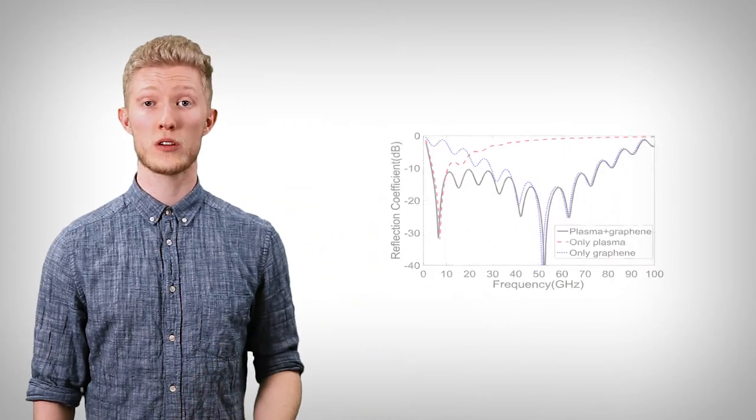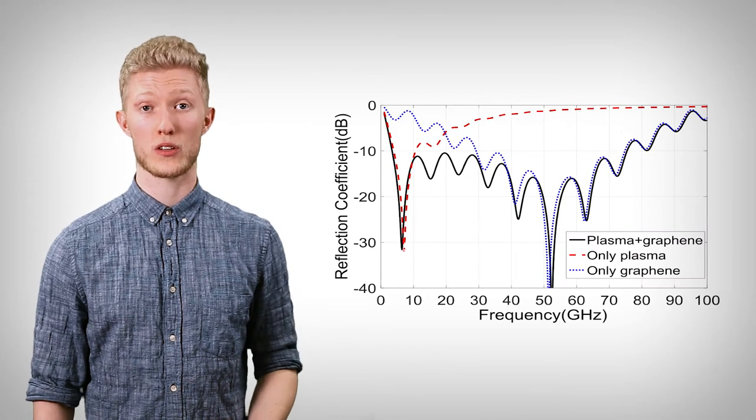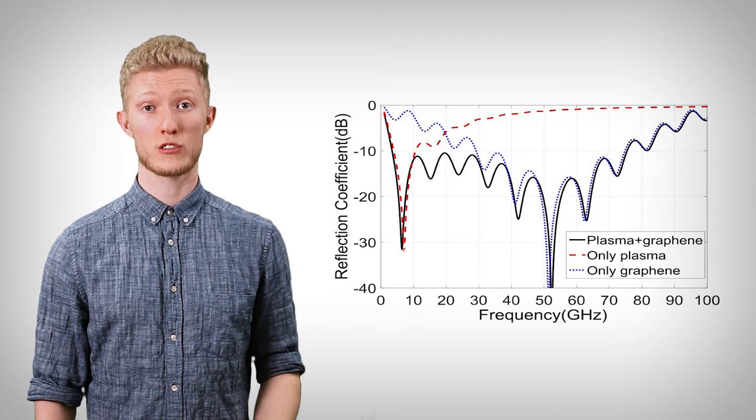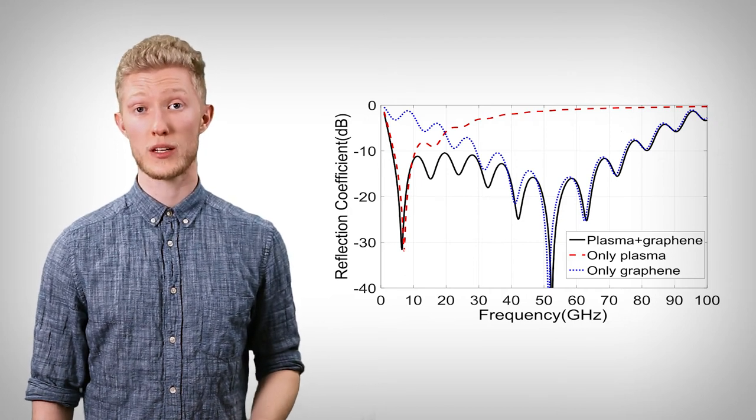The latest advancement in RAM technology, plasma graphene, has demonstrated phenomenal attenuation properties, with one proposed design achieving a 10 dB frequency bandwidth from 3.3 to 70 GHz, even at oblique incidences up to 60 degrees, all while remaining only 16 mm thick.